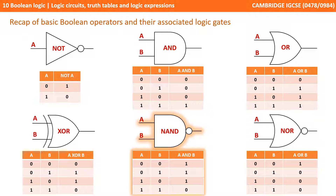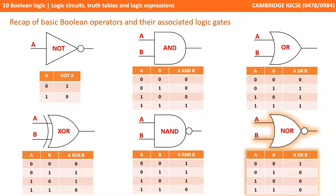We then have the NAND gate. You can think of this as an AND gate followed by a NOT gate, so it reverses the output of the typical AND gate. And in a similar way, the NOR gate is like an OR gate followed by a NOT gate — it effectively reverses the output of an OR gate.